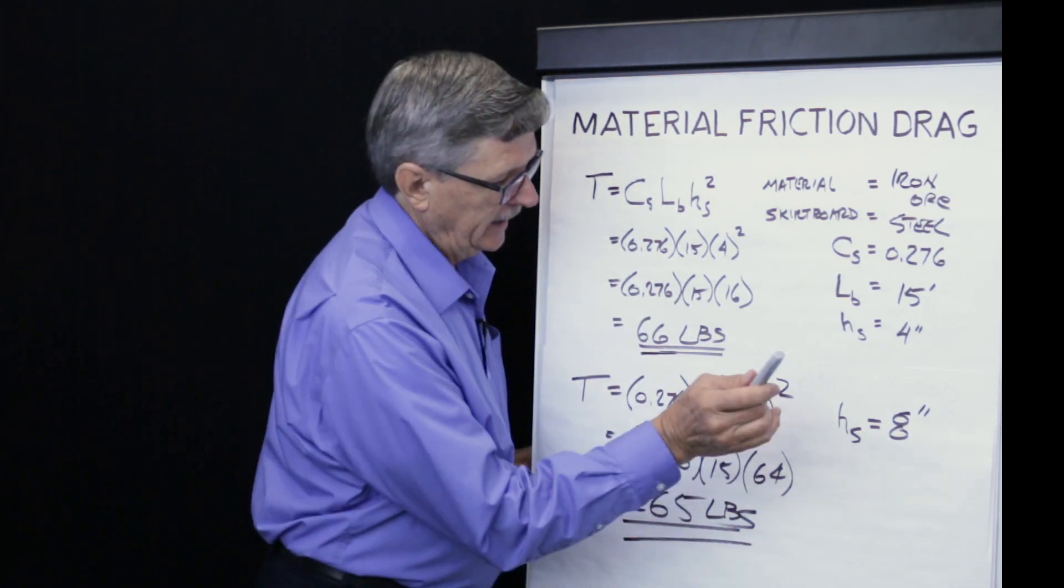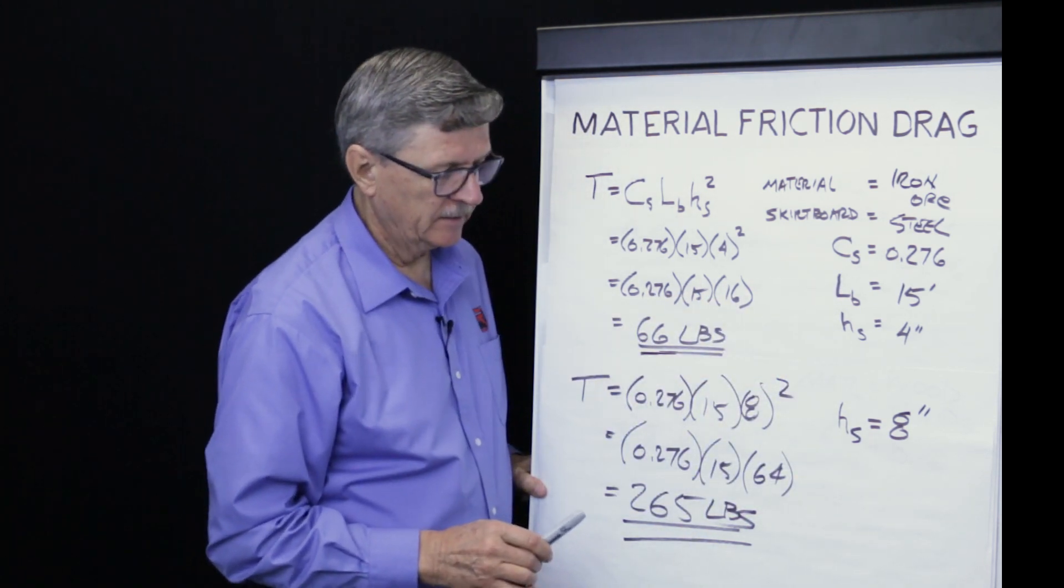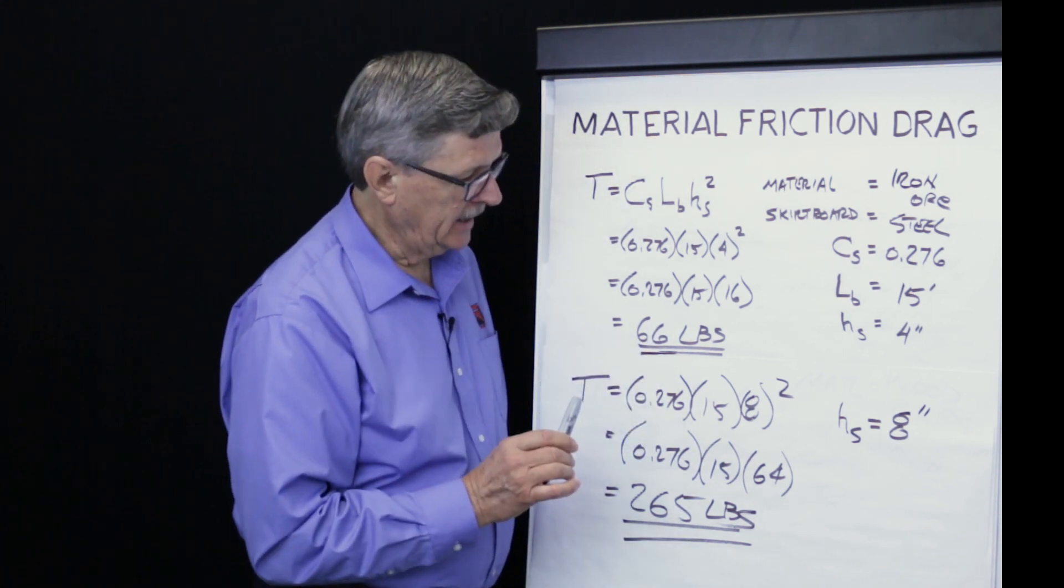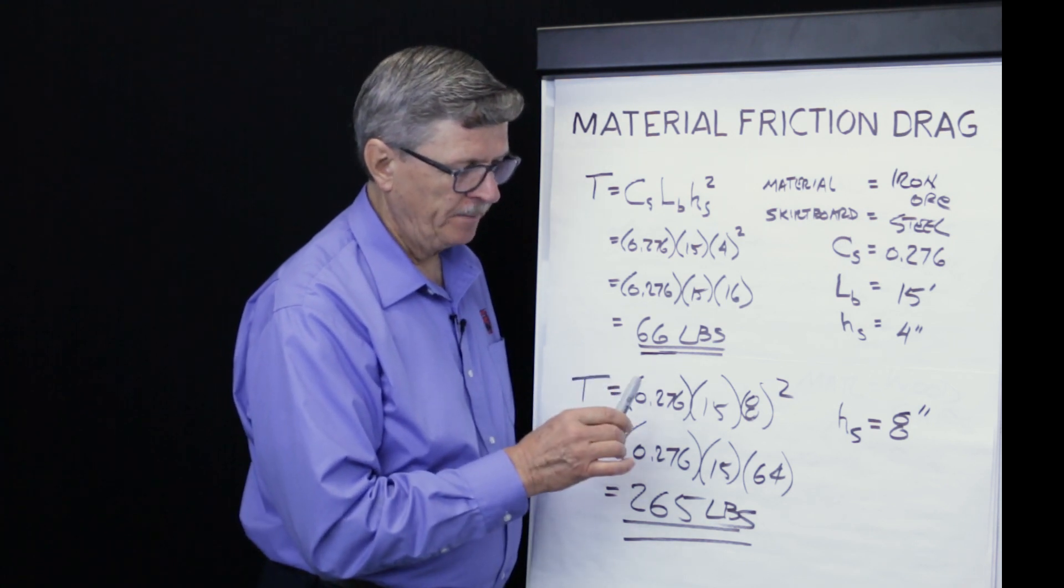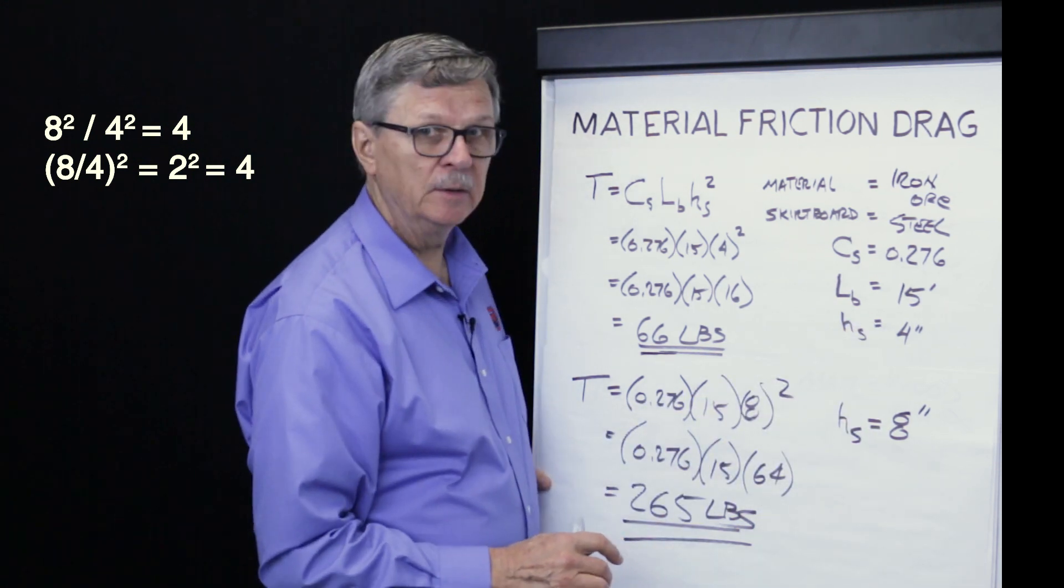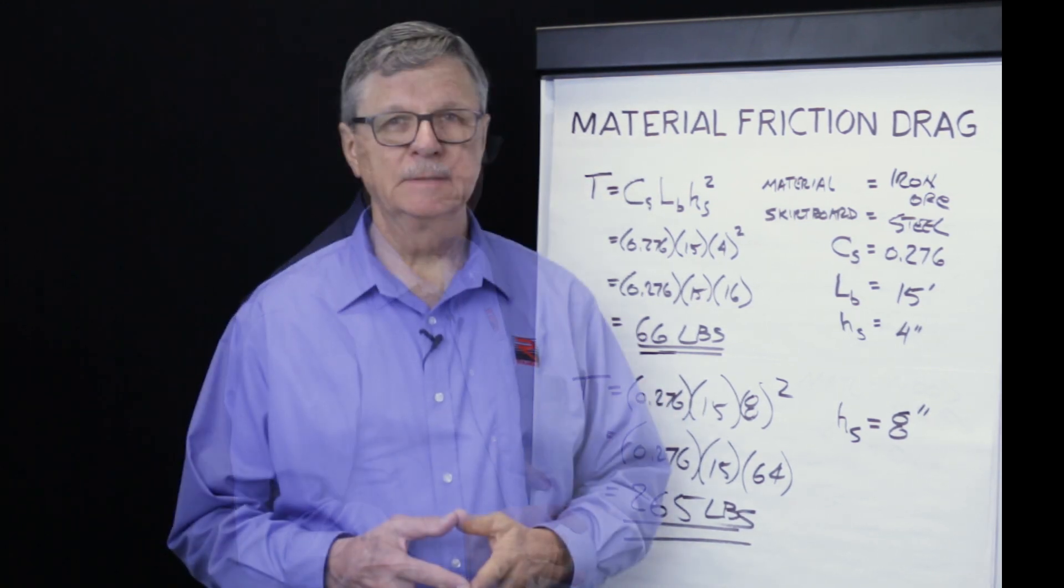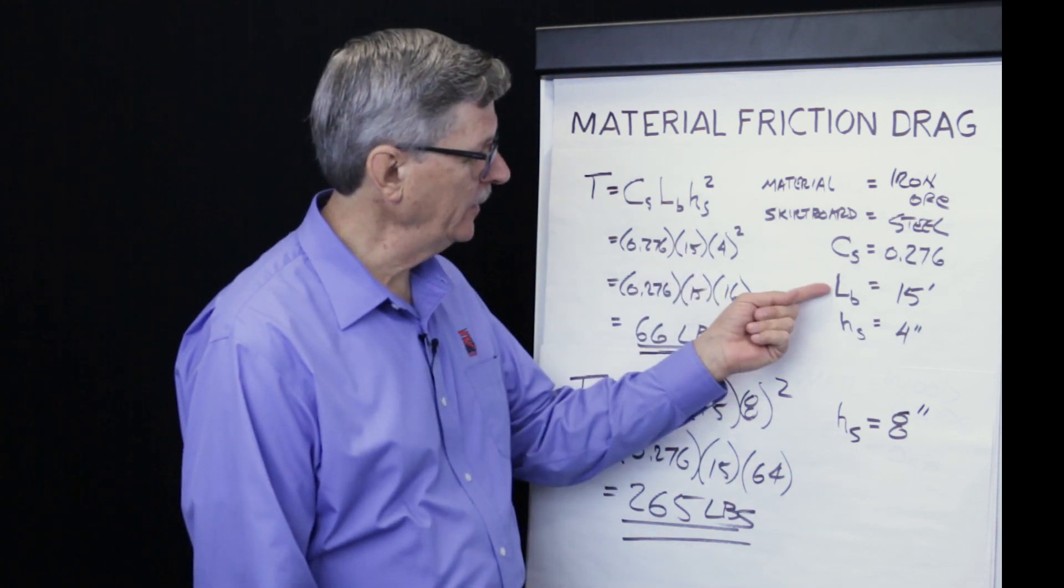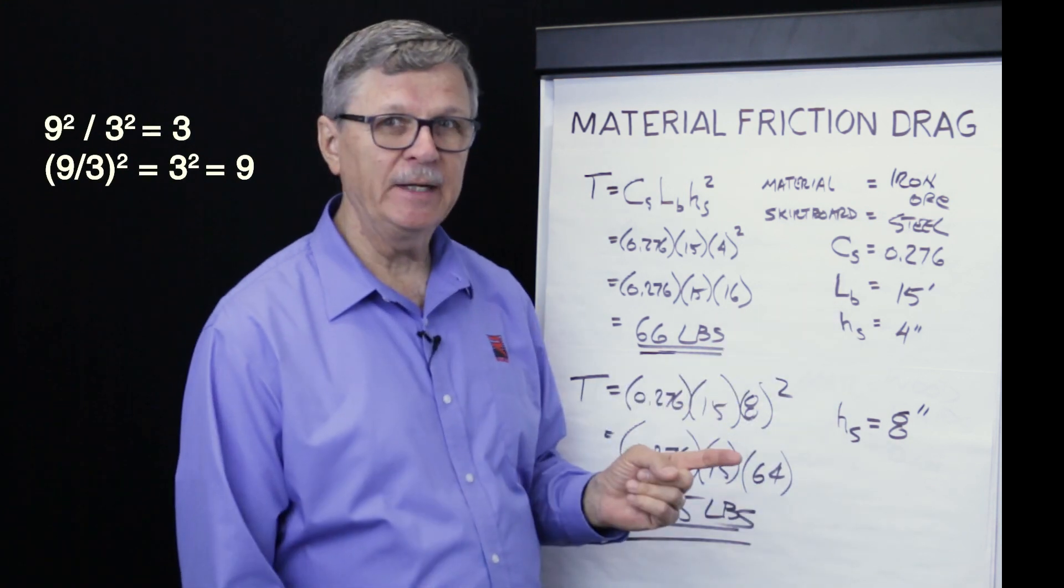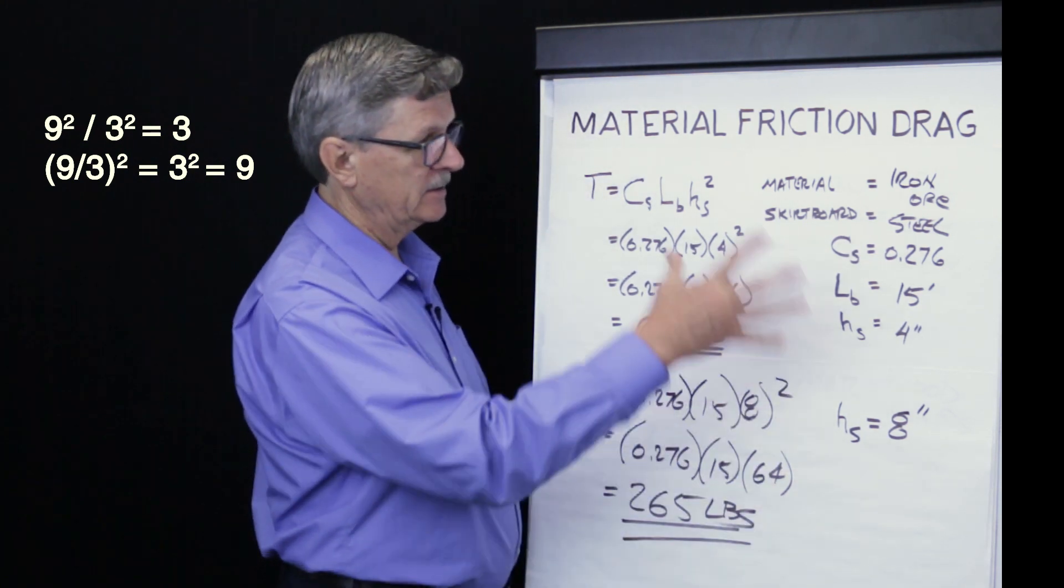Notice that when the iron ore has a depth of 8 inches instead of 4 inches in the zone, the frictional drag from the material equals 265 pounds instead of 66 pounds. That's because the result is proportional to the square of the ratio of the depths. In other words, 8 divided by 4 equals 2, 2 squared is 4. Therefore, this result is 4 times this result. If we were to compare the results of a 3 inch depth of material versus a 9 inch depth of material, notice that 9 divided by 3 is 3, 3 squared is 9. That would give us a frictional drag here 9 times larger than here.